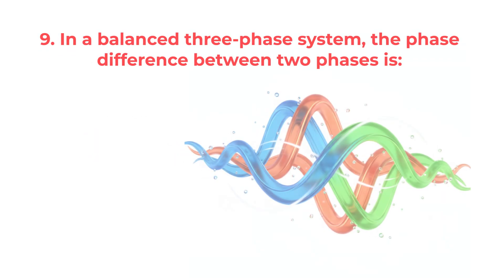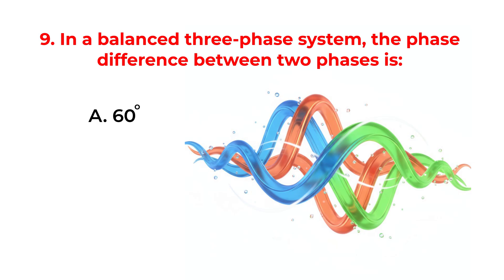In a balanced three-phase system, the phase difference between two phases is: A. 60 degrees. B. 90 degrees. C. 120 degrees. D. 180 degrees.